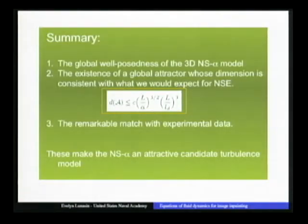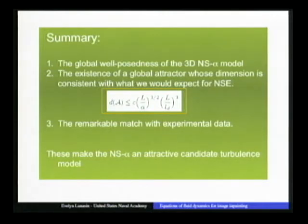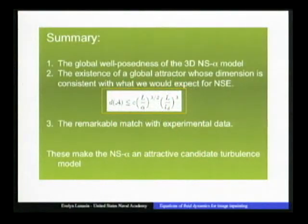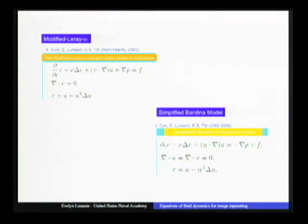As a summary, we have global well-posedness results for the 3D Navier-Stokes alpha model approximating Navier-Stokes. There exists a finite-dimensional attractor, consistent with what we expect for Navier-Stokes: the number of degrees of freedom depends on the domain size divided by the Kolmogorov length scale cubed, with a pre-factor that blows up as alpha goes to zero. The other alpha models behave similarly with good experimental match.